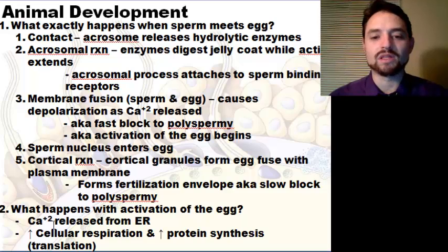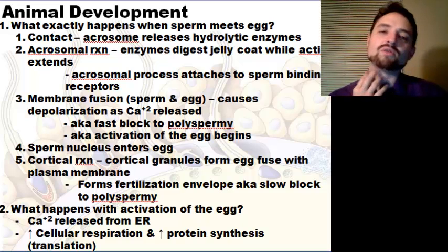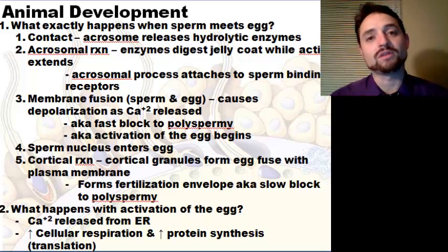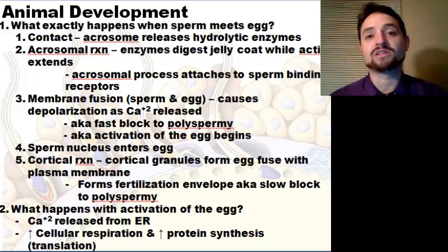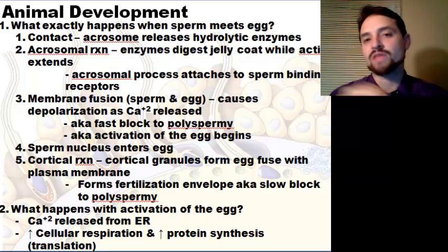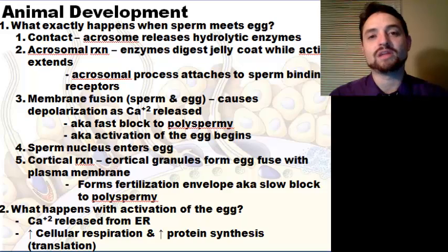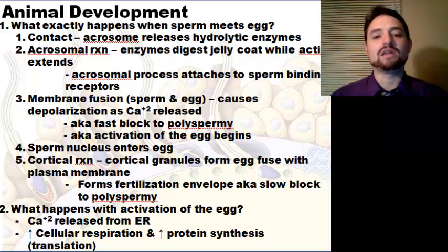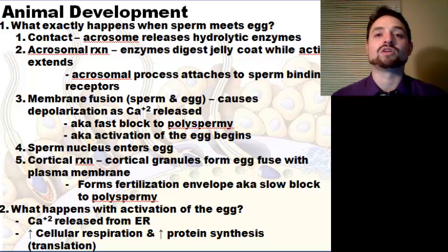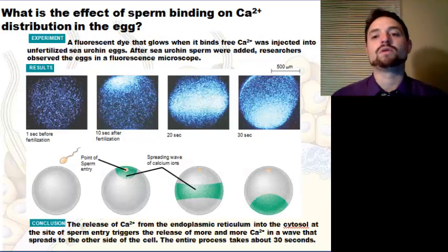What happens with activation of the egg? Calcium is released from the smooth ER. The smooth ER stores calcium because free calcium ions inside a cell trigger reactions. So when the sperm and egg unite, wherever that occurs on the egg, several reactions take place — one of which is a release of calcium ions. This increases respiration, increases protein synthesis and translation, and essentially starts the process of cell division.